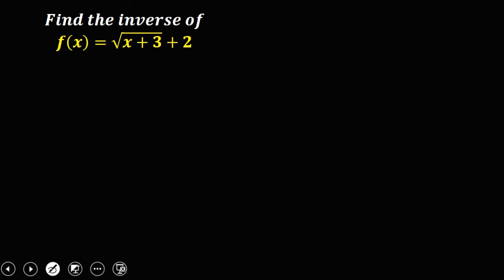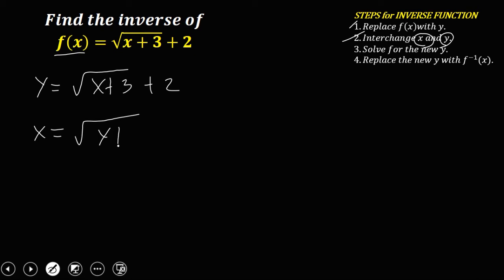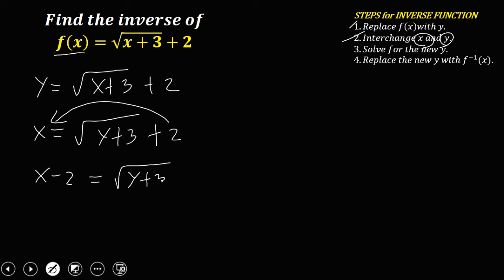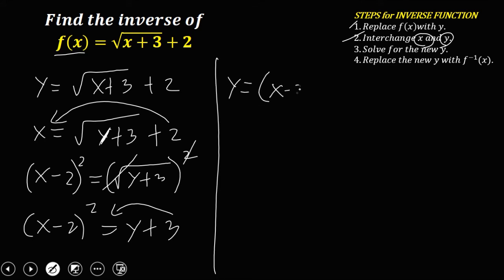For the next given, replace f of x with y. So y equals the square root of x plus 3, plus 2. Then interchange the x and y, so x equals the square root of y plus 3, plus 2. Then to solve for y, transpose: x minus 2 equals the square root of y plus 3.